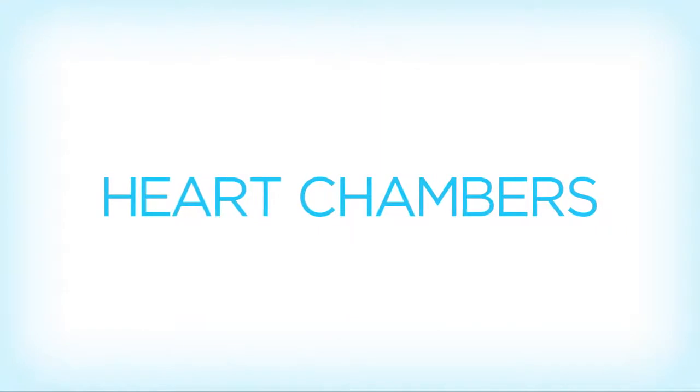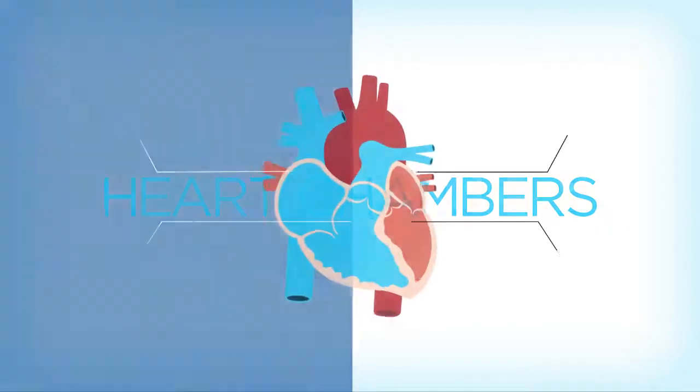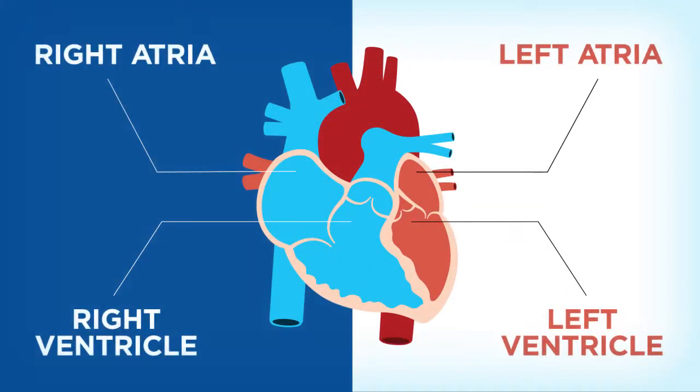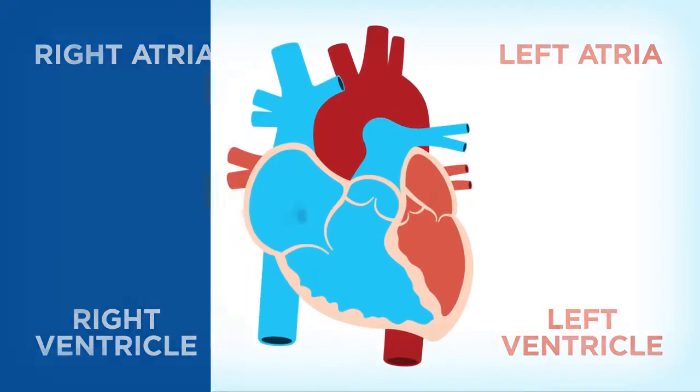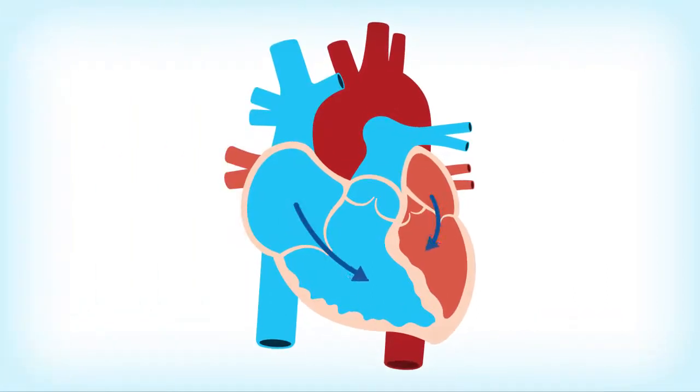Your heart is divided into four chambers, the right and left ventricle and the right and left atria. Blood flows from the atria to the ventricles and the ventricles pump blood to your lungs and throughout your body.